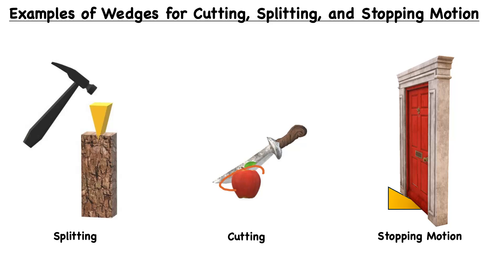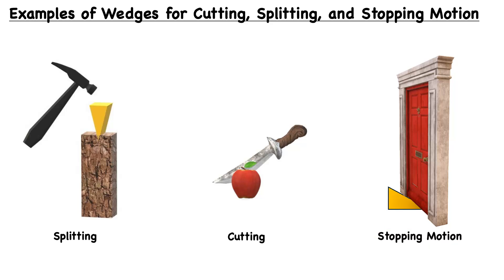We have this high pressure at the cutting tip, which allows us to cut through and penetrate an object. Lastly, we have a slightly different example to what we've talked about before, which is stopping motion — an obvious example being a doorstop.